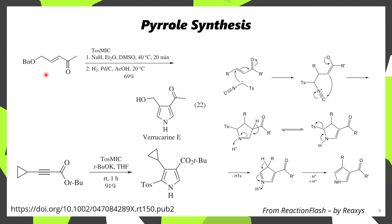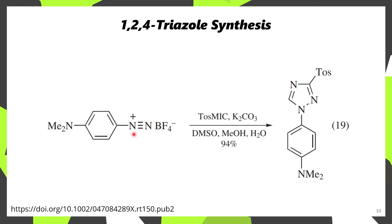To make a pyrrole, react TOSMIC with an electron-deficient alkene, also known as a Michael acceptor. The anion adds in a 1,4-addition fashion, forming an enolate. The alpha position of this enolate attacks the carbon, forming a dihydropyrrole, and through elimination and tautomerization the toluene sulfenyl group is eliminated, affording a pyrrole. This also works for alkynes, as demonstrated in a cyclopropane-containing pyrrole—in that case the tosyl group is retained since the pyrrole forms without needing to eliminate it. Using a diazonium with TOSMIC affords a 1,2,4-triazole.